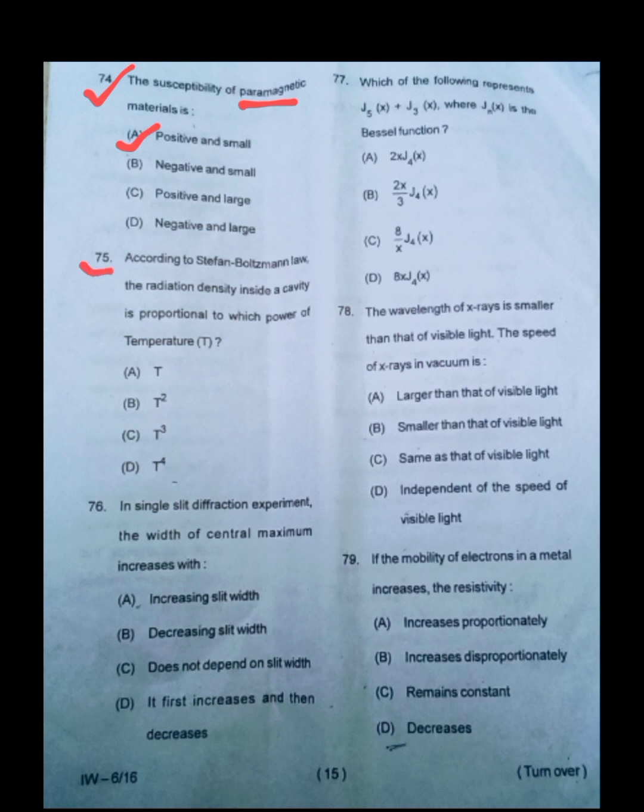In question number 75, according to Stefan-Boltzmann law, the radiation density inside the cavity is proportional to which power of temperature T? Temperature T, T to the power 2, T to the power 3, T to the power 4. Answer is T to the power 4.